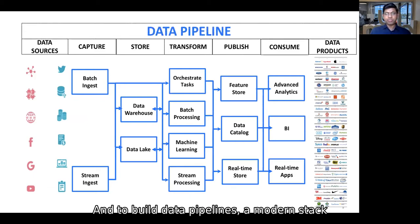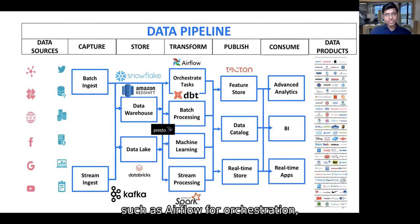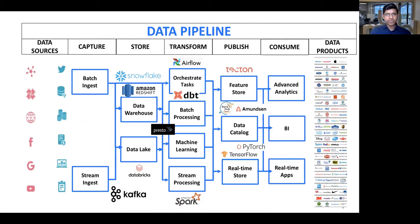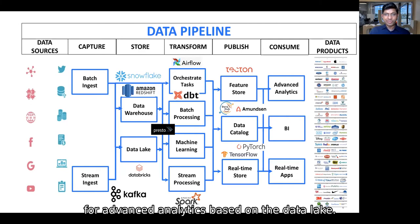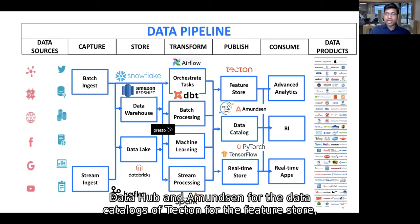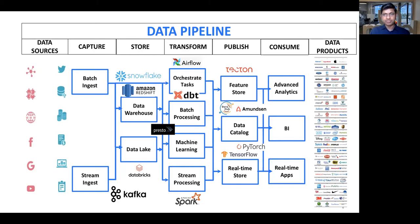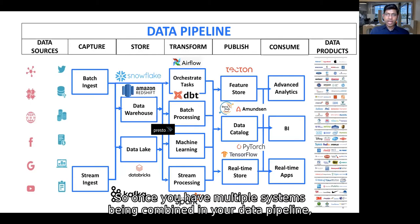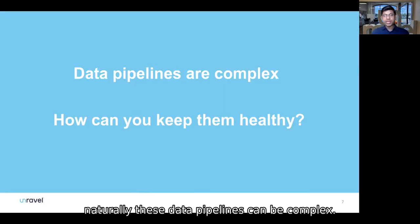To build data pipelines, a modern stack has emerged that involves a variety of systems such as Airflow for orchestration, Snowflake and Redshift for data warehousing, Databricks and Presto for advanced analytics based on the data lake, Kafka and Spark Streaming for processing data in real time, DataHub and Amundsen for data catalogs, Tecton for the feature store, as well as TensorFlow and PyTorch for machine learning. So once you have multiple systems being combined in your data pipeline, naturally these data pipelines can be complex.